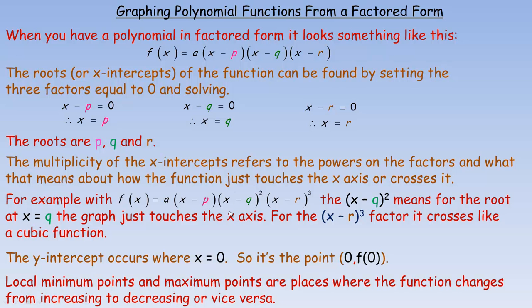For example, let's say we had this function. Notice I've taken the x minus q factor and put a power of 2 on it, and the x minus r power of 3. The x minus q squared, the power of 2, means that the graph just comes down and touches the x-axis, but it doesn't actually cross. The x minus r cubed factor means it crosses, kind of looking like some of the cubic function. We'll get into that one specifically in the second example.